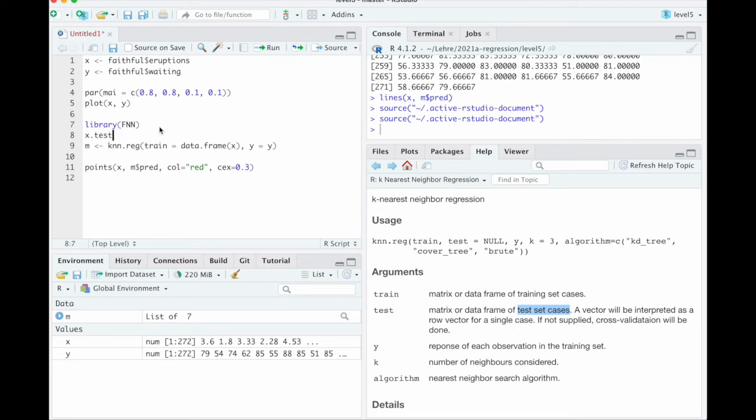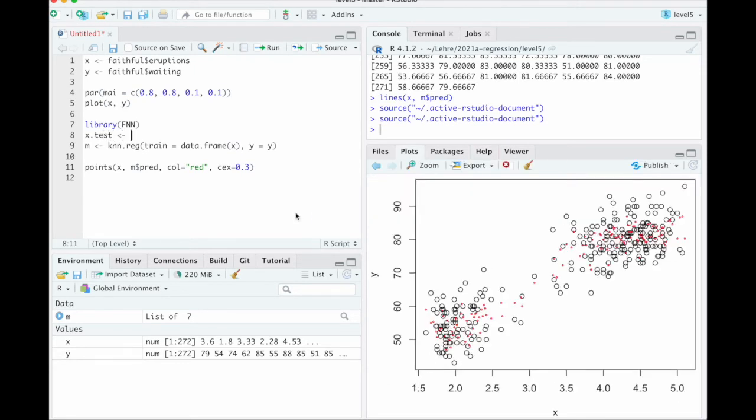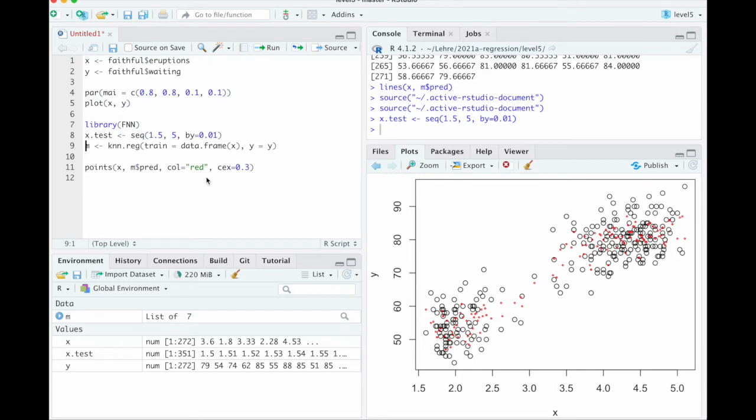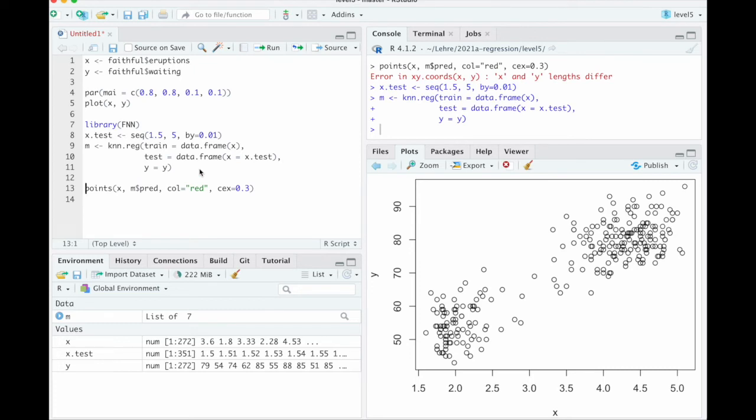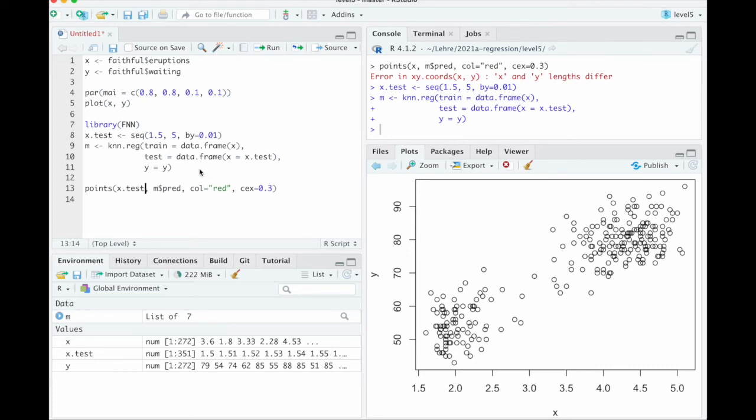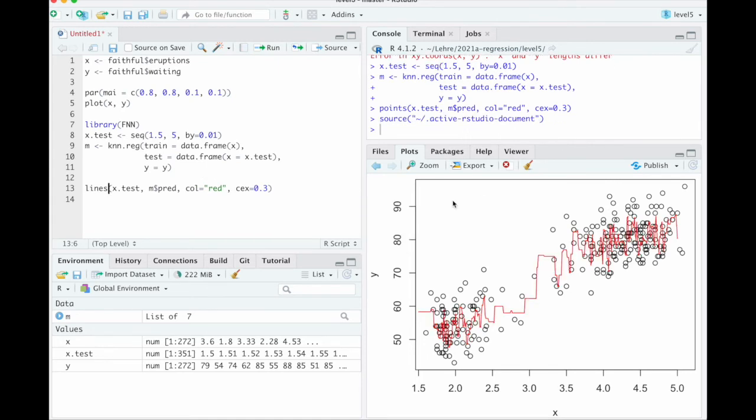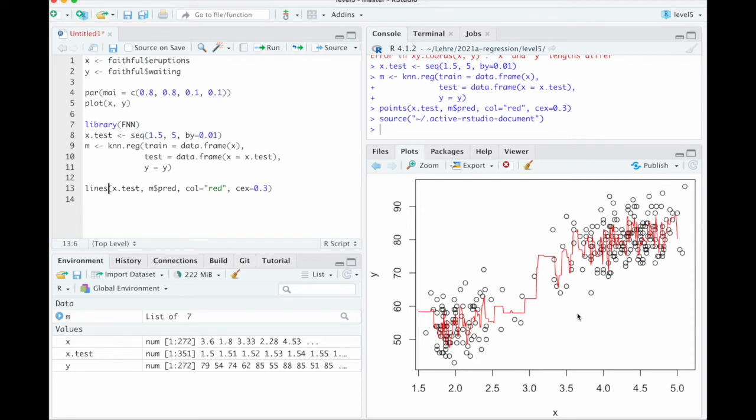So let's do that. So x test, let's call it test like they do. Ranges are from 1.5 to 5 maybe. And I don't know. Let's go in steps of 0.01. That's 351 values. That seems reasonable. And then here I tell it test is x test. And I think here we actually need to make it a data frame. Let's try that. Good. And then here we need to do x test, I assume. Yes. And now we can go back to lines and all will be well.